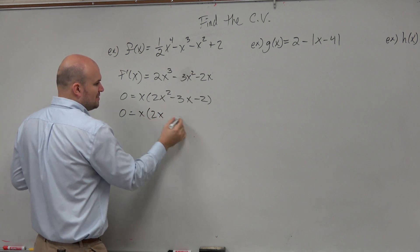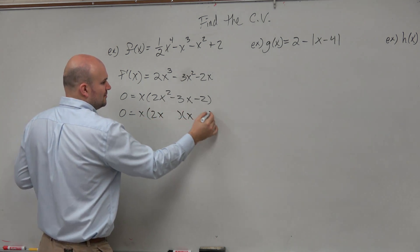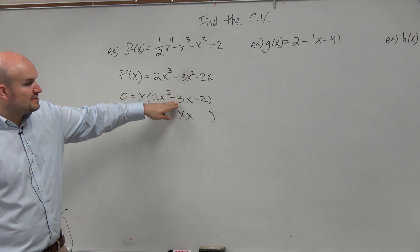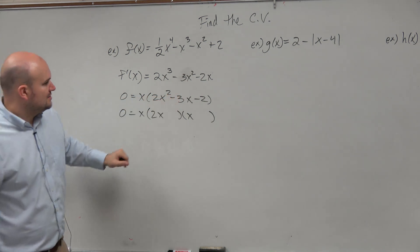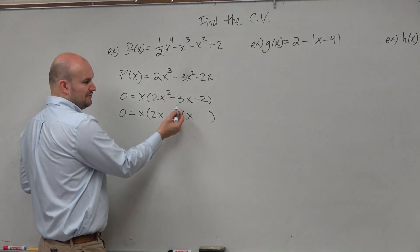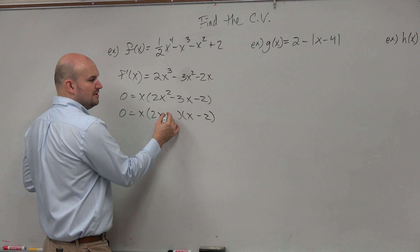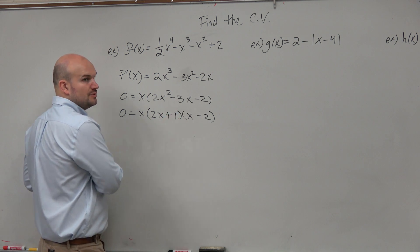And you could say, all right, well, we could have 2x in 1 and x in the other one. They need to multiply to give me negative 2, but they need to add to give me negative 3. So if I did 2x times negative 2, that would give me negative 2, and then add 1. This would all work.